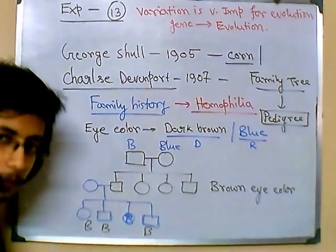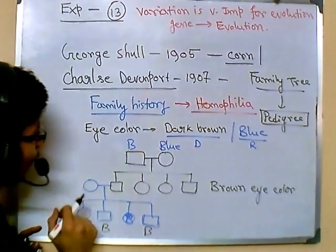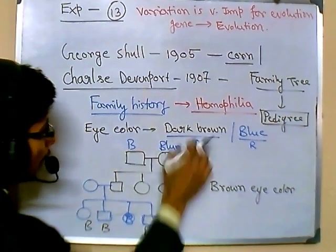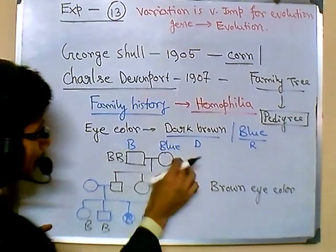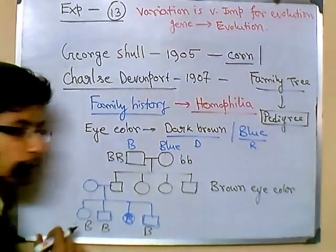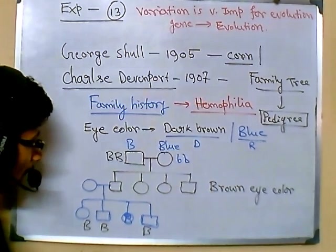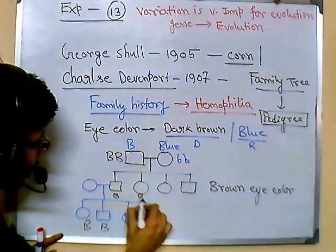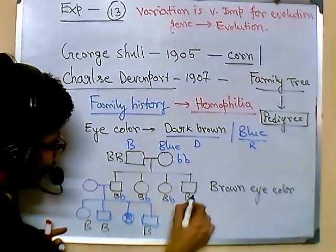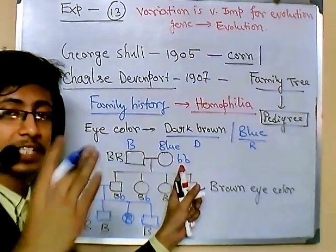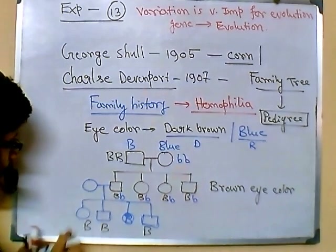Looking at this pedigree, we can apply a mathematical formula. For example, if the male has dark brown eyes — homozygous dominant — we write capital B capital B, and the blue eye color is small b small b. After this cross, all the offspring will be brown-eyed because they each carry one dominant gene. Even though they also carry one blue allele, since it is recessive it will not be expressed.